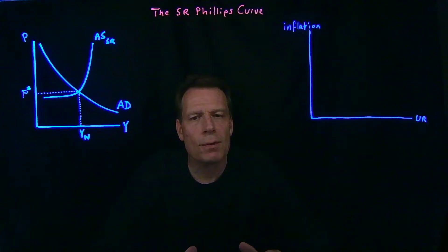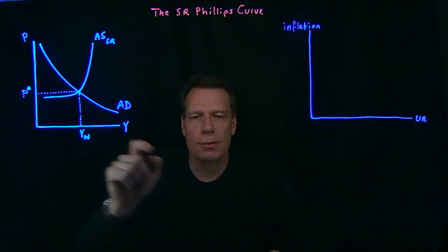That economy reaches its long run equilibrium when the price level settles to a point where at that price level, the equilibrium level of GDP, right off of the aggregate demand curve, is equal to the natural level of GDP.